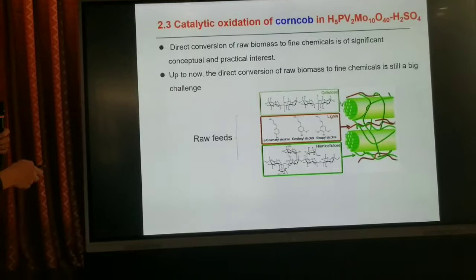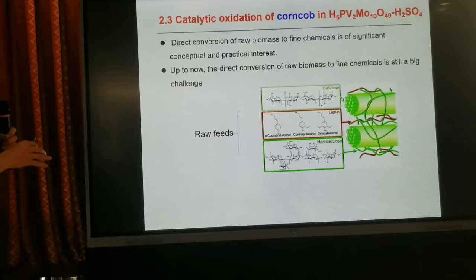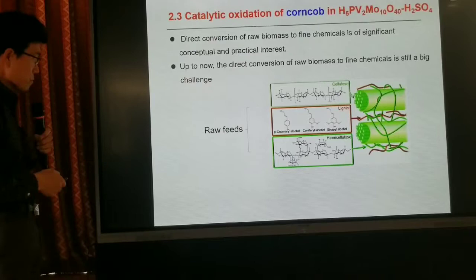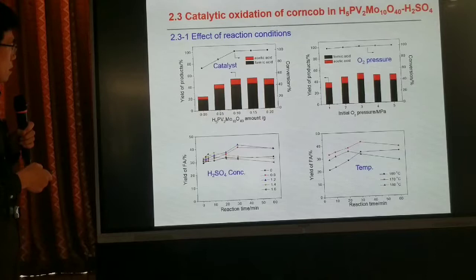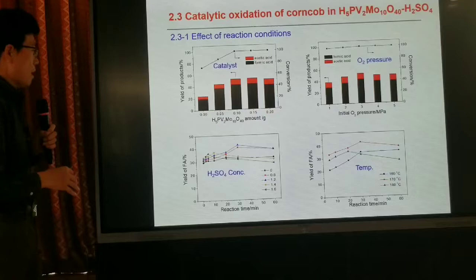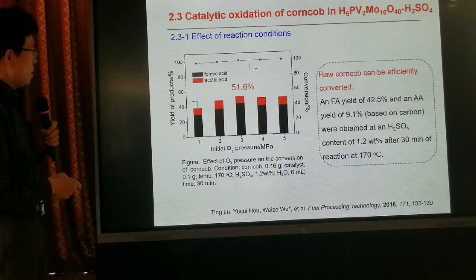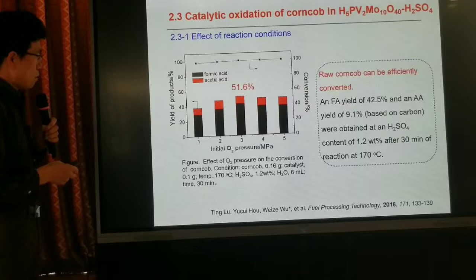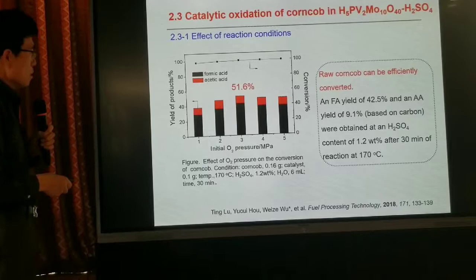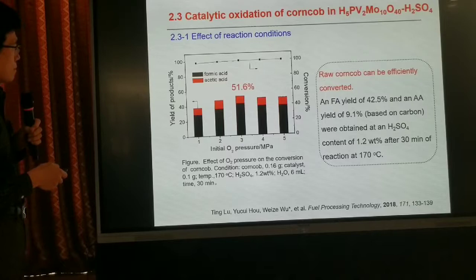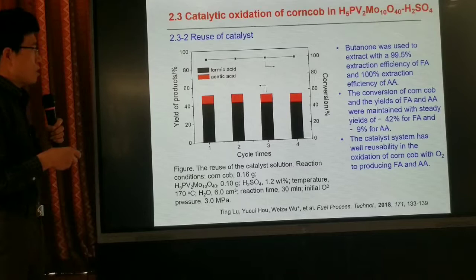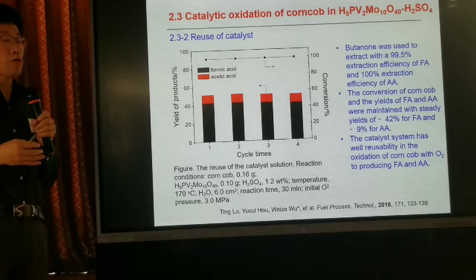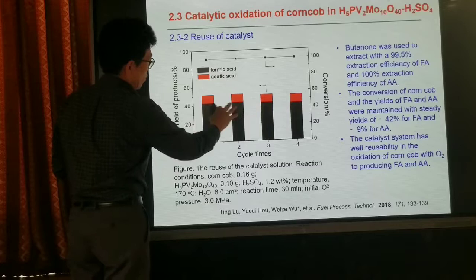We then used the heteropolyacid and sulfuric acid system to oxidize corn straw to chemicals. We studied the influence of catalyst loading, O2 pressure, sulfuric acid concentration, and temperature. Under optimized O2 pressure, we obtained 51.6% yield of formic acid and acetic acid with 100% conversion. After oxidation, we used butanol to extract the products — formic acid and acetic acid — from the aqueous solution. The catalyst system can be reused for four times.